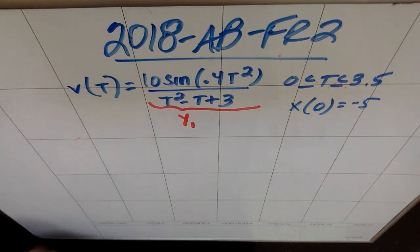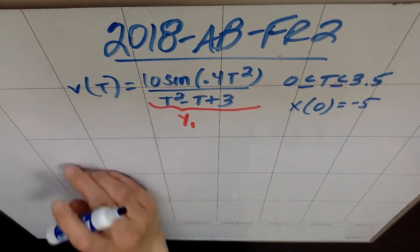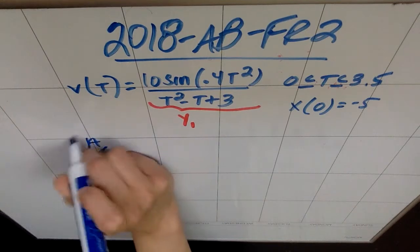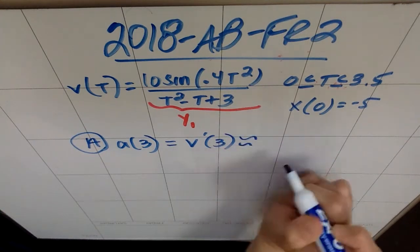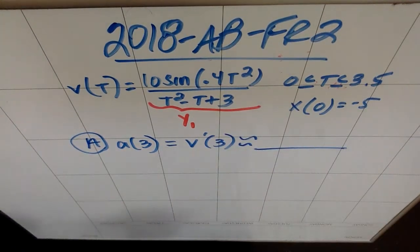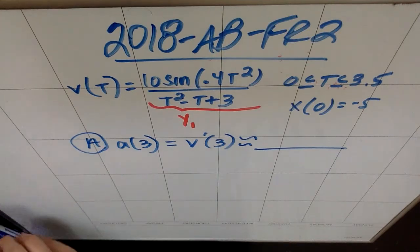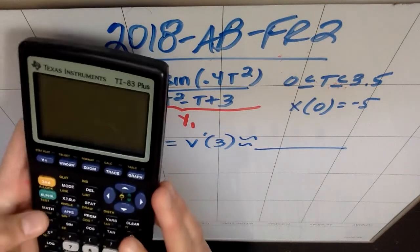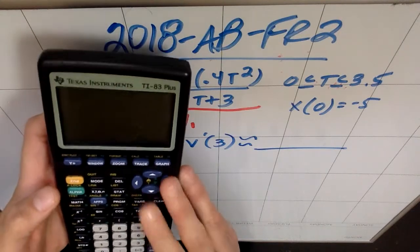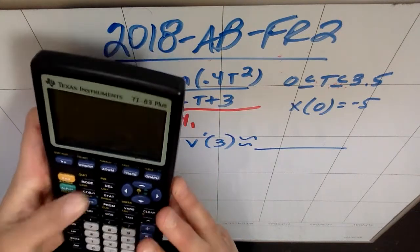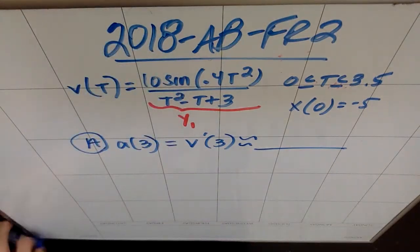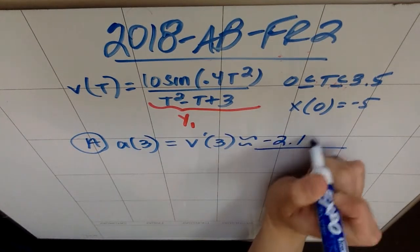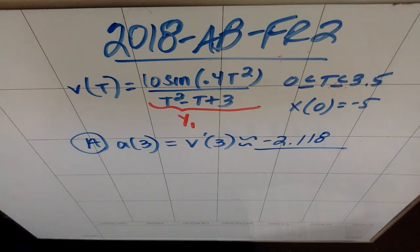First thing we're asked in part A is to find the acceleration of the particle at t equals 3. This is a calculator problem, so your calculator is going to do all the heavy lifting. What you need to understand is simply that the acceleration at 3 is the same as V prime of 3. That's what you should communicate, and then you should get an answer. They didn't give you units, so you don't have to come up with units.